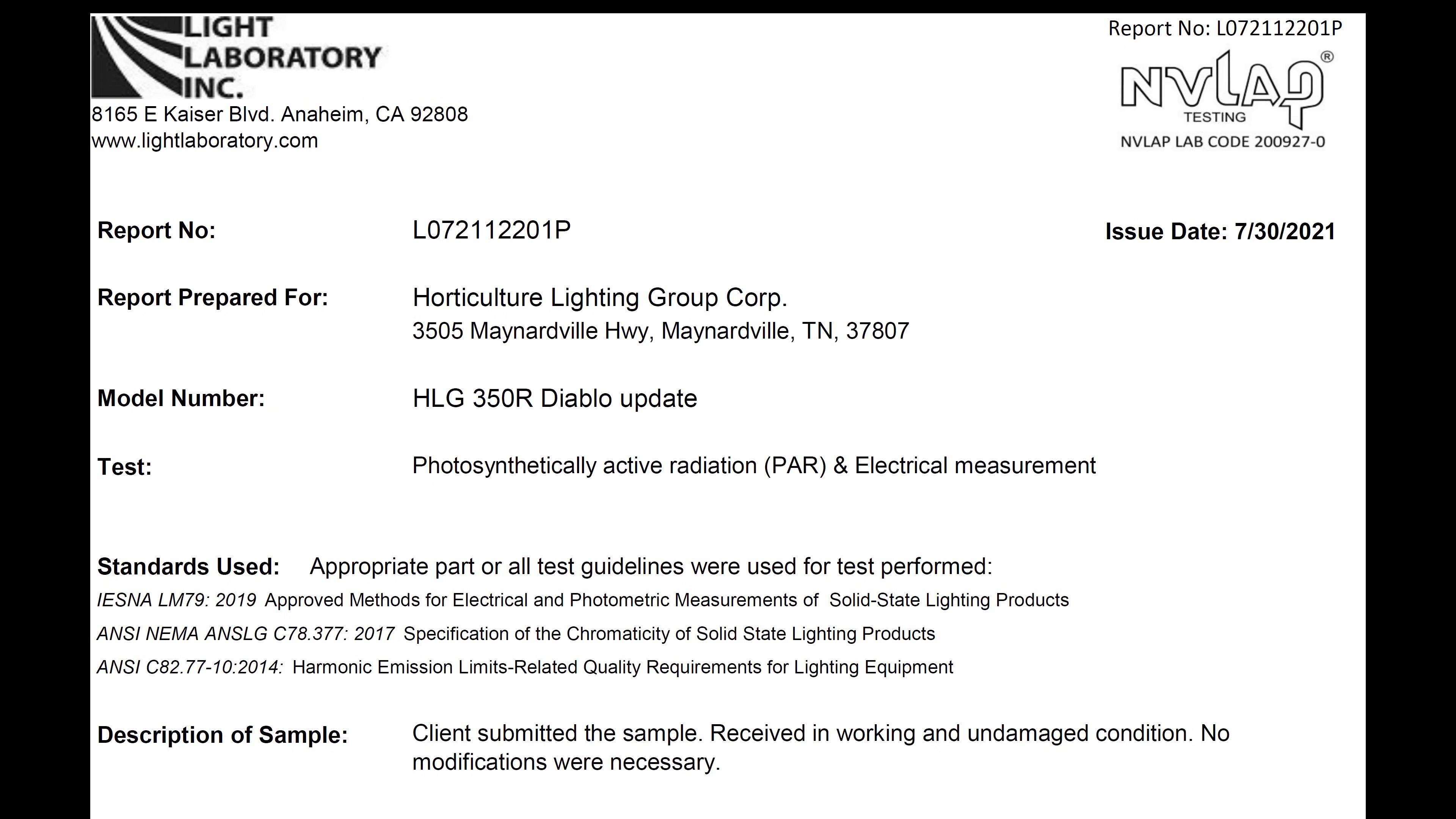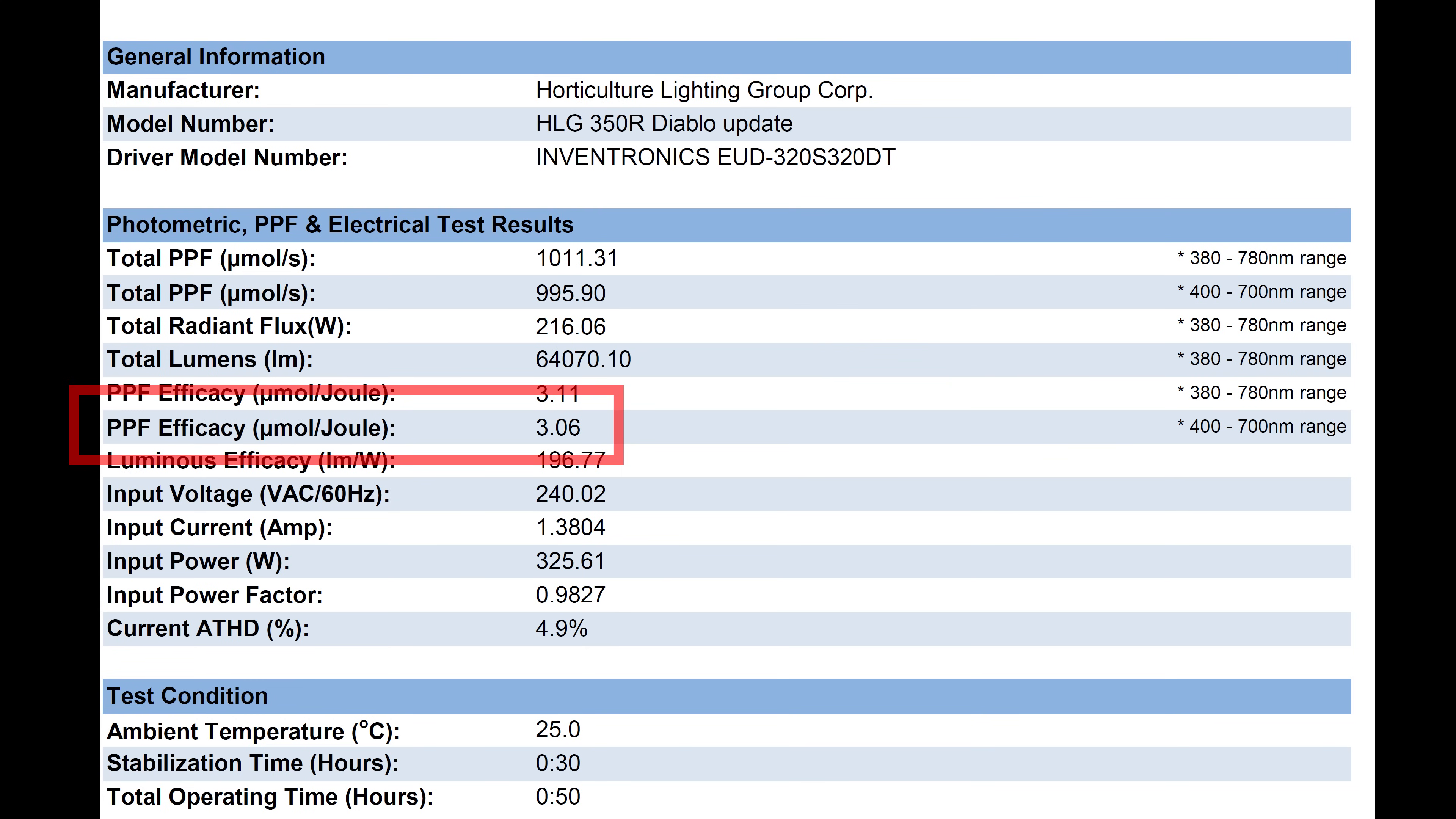So why is this lower than the HLG test? The HLG test was done in an integrated sphere and they got 3.06 micromoles per watt. I'm going to sit down and go through some slides and explain why this difference occurs.